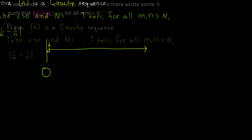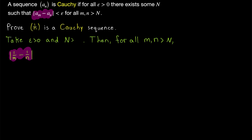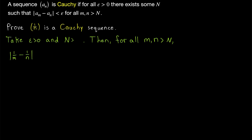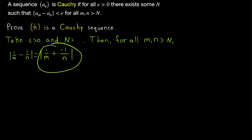Let's go ahead and prove it. We start with the expression representing the distance between the m-th and n-th terms of our sequence. We would love to not have m and n wrapped up in the same absolute value bars. Oftentimes we can fix that sort of problem with the triangle inequality, but the triangle inequality only applies to the absolute value of a sum, not to the absolute value of a difference. But that's no problem — we'll just rewrite this subtraction as addition. It's equal to the absolute value of 1 over m plus negative 1 over n. Now that we have it as a sum, we can apply the triangle inequality.